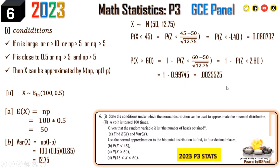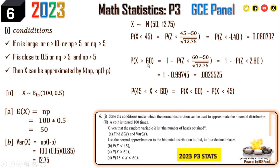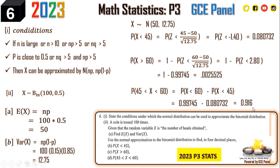For the last part, P(45 < X < 60), we compute P(X < 60) − P(X < 45). P(X < 60) = 0.99745 from above, and P(X < 45) = 0.080732. Subtracting gives 0.916718. That is the solution to this question.